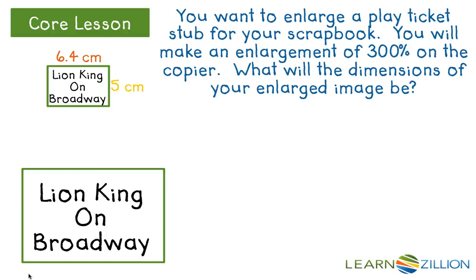We must first look at our K value, or our ratio. In this case, it's written as a percent — 300% — and we can write 300% as the ratio of 300 to 100, which simplifies to 3. So our scale factor is 3. Therefore, we can work with the pre-image, or the original ticket widths and lengths, to find the image widths and lengths, which is going to be our enlargement.